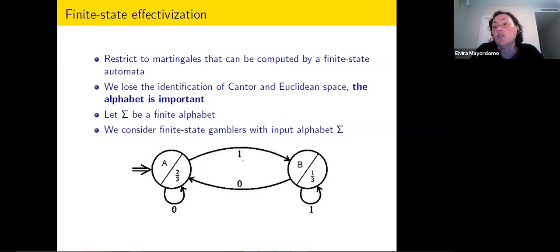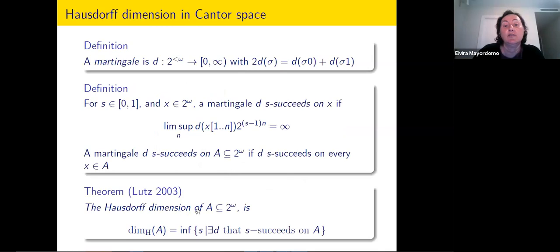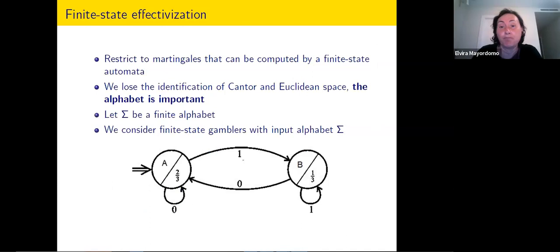For instance, the fraction two-thirds in state A means you bet two-thirds that the next symbol is zero, and correspondingly one-third on the next symbol being one. The betting depends only on the state you're in. So the number of different possibilities coincides with the number of states — in this simple example, only two different choices.